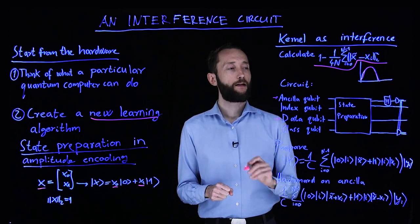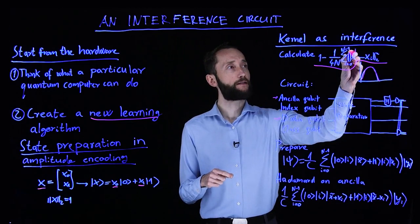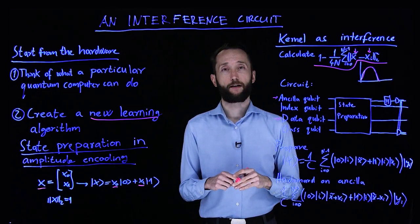Then we have an ancillor qubit which will be entangled with the test instance that we are trying to calculate the kernel on and the data instances that we are given in the training set.